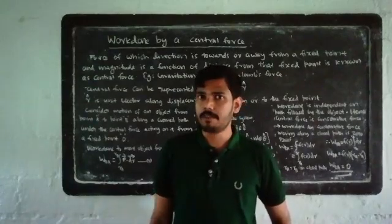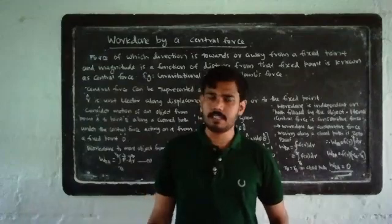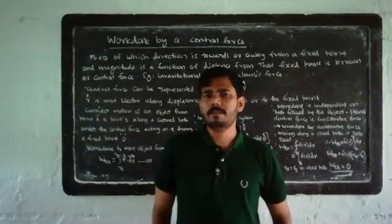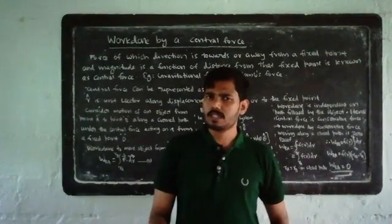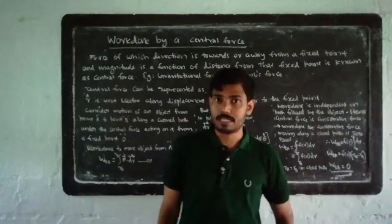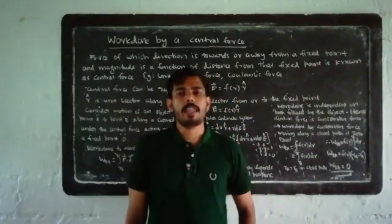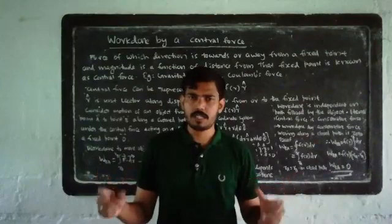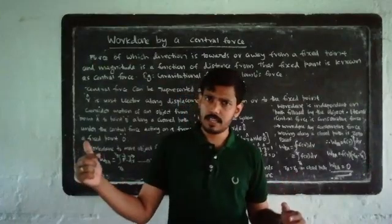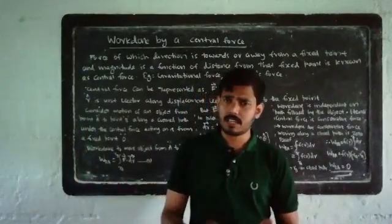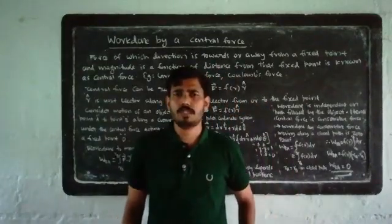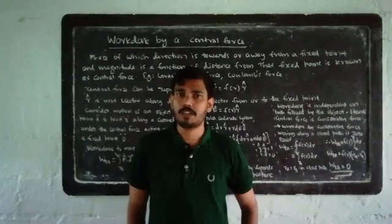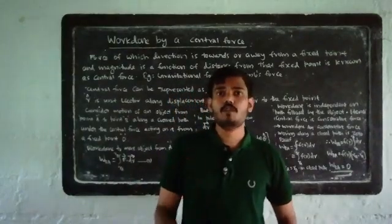Similarly, the Coulomb force is (1/4πε₀)(q₁q₂/r²), whose magnitude has r² in the denominator, making it a function of r. Its direction is along the line joining two charges — towards or away. So both gravitational force and Coulomb force satisfy the definition of central force.